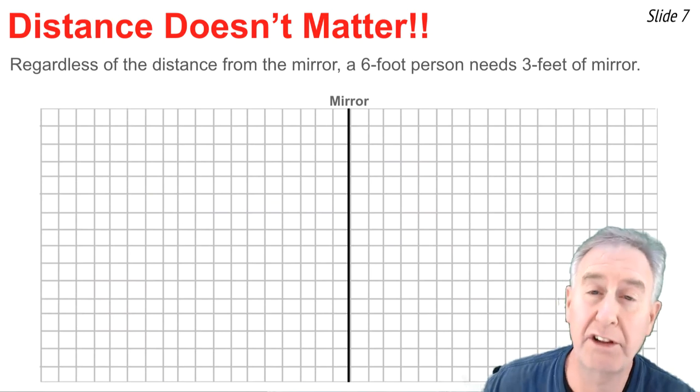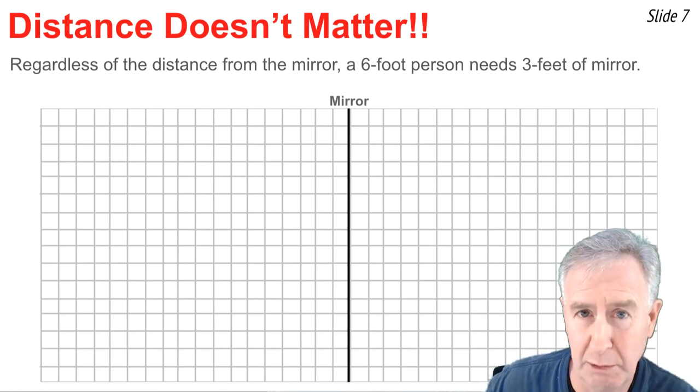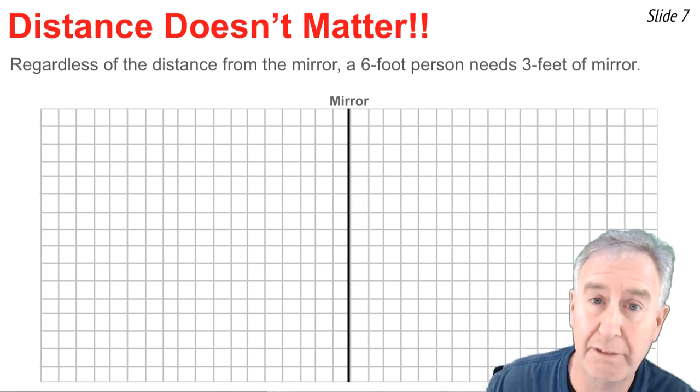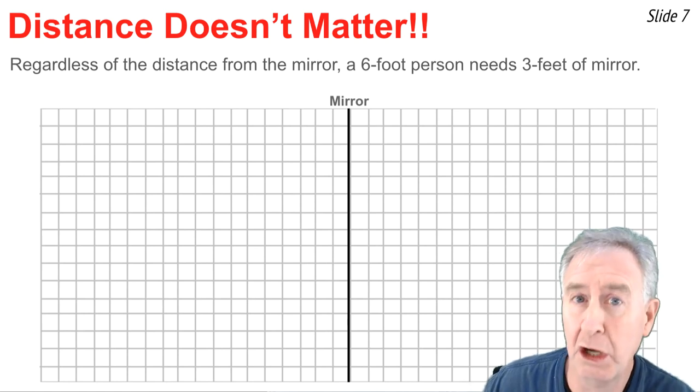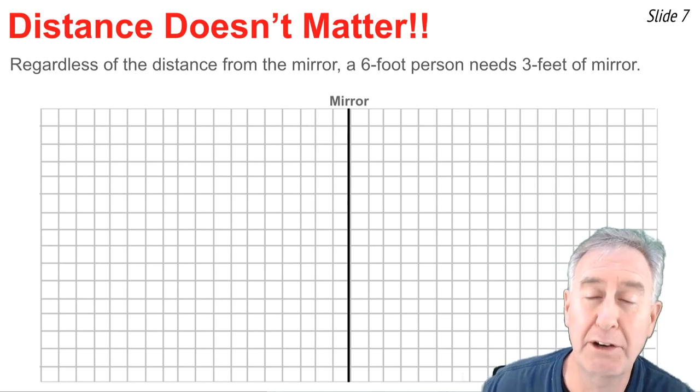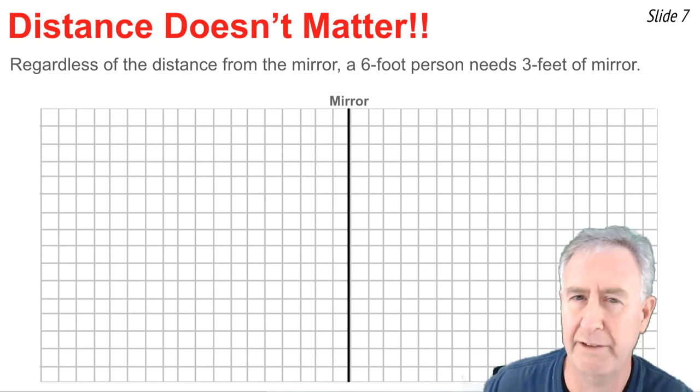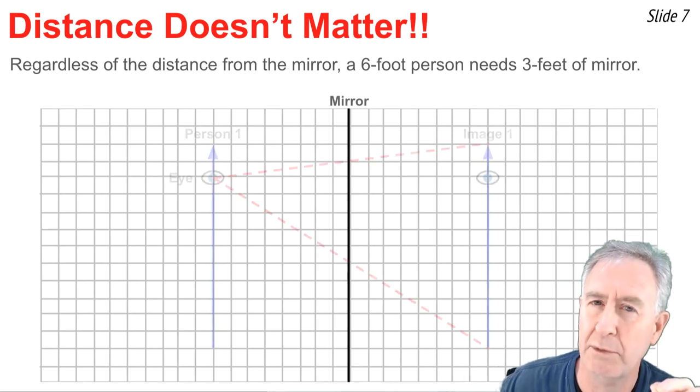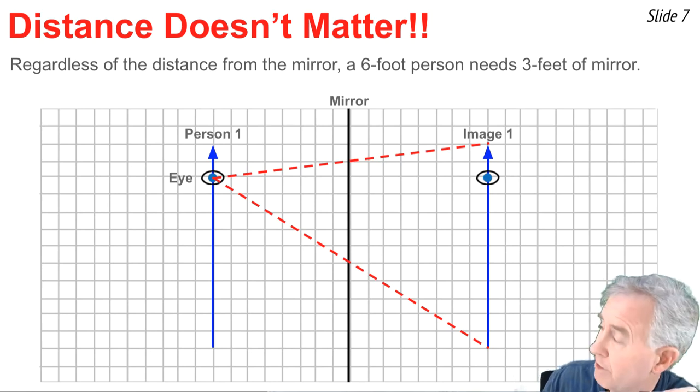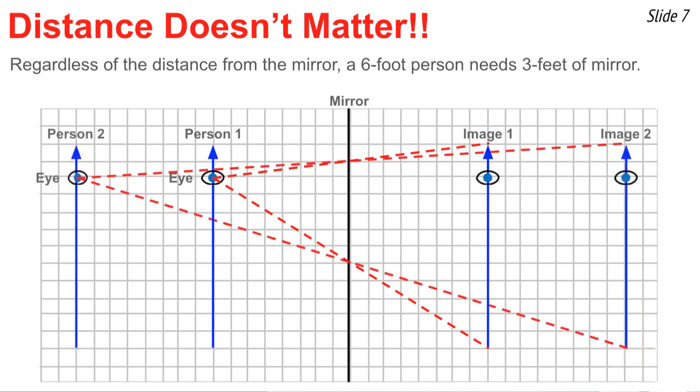So we've learned that regardless of where the person is located, whether they are four feet or eight feet from the mirror, that the six-foot-tall person only needs three feet of mirror to view his or her entire image. And this becomes real evident if we take the two ray diagrams that we've done and we place them one on top of the other like this, we notice that whether they're four or eight feet away, they are sighting along a different line but at the same point on the mirror. And that point,